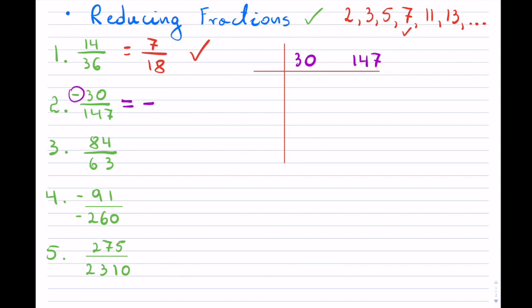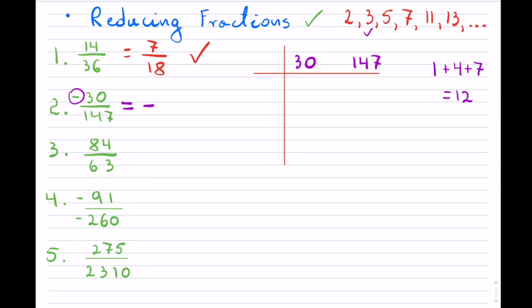It's easier to always start with the lower number. I notice that 30 is divisible by 2; however I can't use 2 because 147 ends in a 7, which is odd, so 2 will not work. Moving to the next prime — will 3 work? 3 goes into 30 evenly 10 times. From the divisibility test: 1 plus 4 plus 7 equals 12, and 3 goes into 12, so 3 goes into 147 as well.